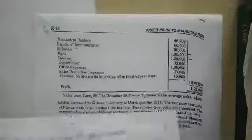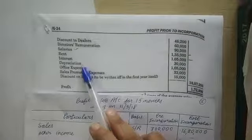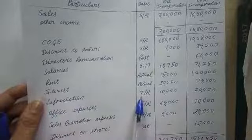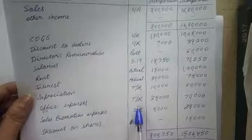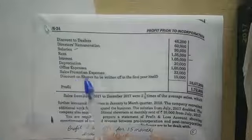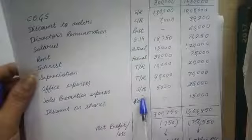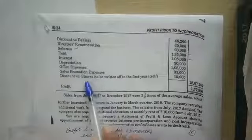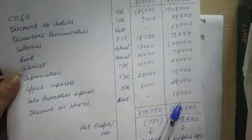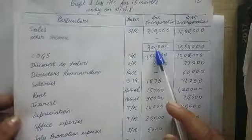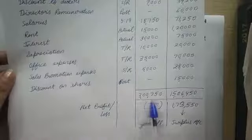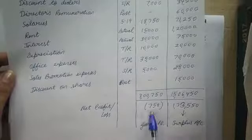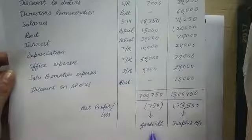After interest: depreciation is allocated on time ratio. Office expenses — nothing specific mentioned — are also apportioned on time ratio. Sales promotion expenses are allocated in the sales ratio. Discount on shares, since shares belong to the company, the entire amount goes into the post-incorporation period. Finally, our pre-incorporation income was ₹3,00,000 and expense was ₹750, resulting in a loss that will go to the Goodwill account.